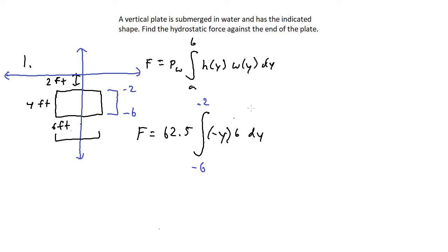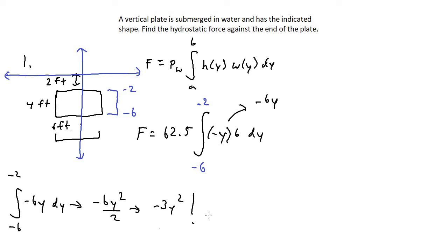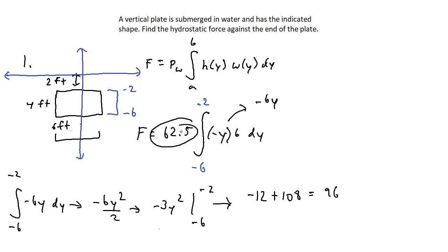Simplifying gives negative six Y. So the integral from negative six to negative two of negative six Y dY equals negative three Y squared, evaluated from negative six to negative two. Plugging in negative two gives negative three times four, which is negative 12. Plugging in negative six gives negative 108. Negative 12 minus negative 108 gives 96. Multiplying by the weight density of 62.5, we get exactly 6,000 pounds of force acting on the rectangular plate.